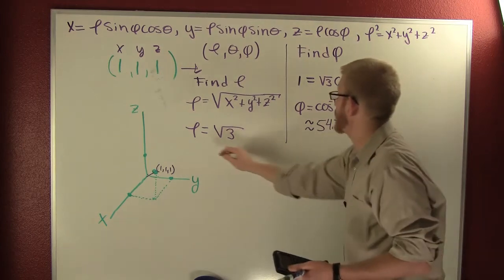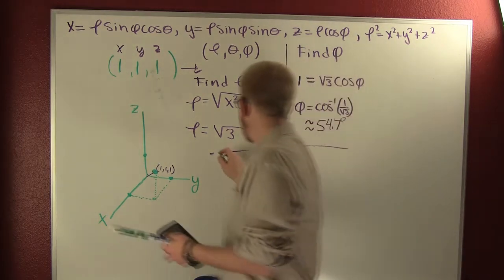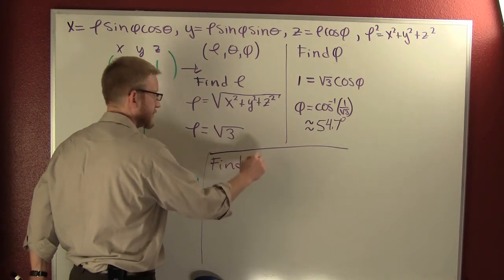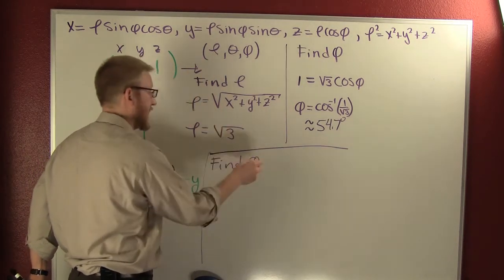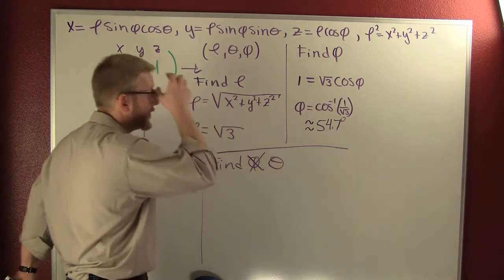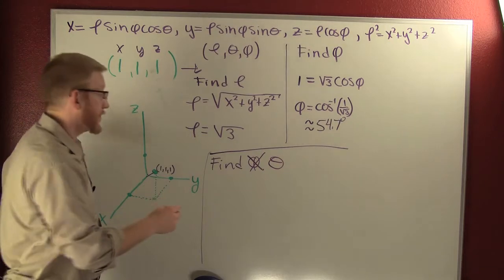So now we need to find theta. That's phi. Cross it out. Theta. What are we going to use? Why don't we use this first one up here.